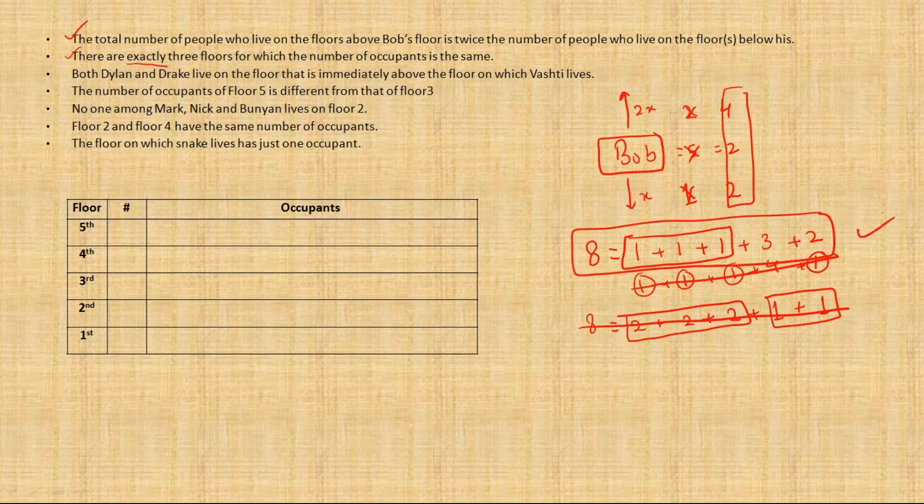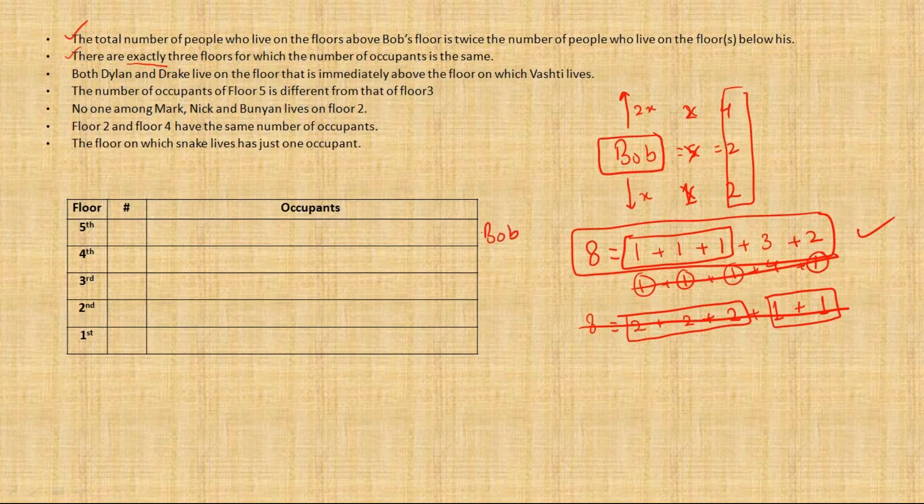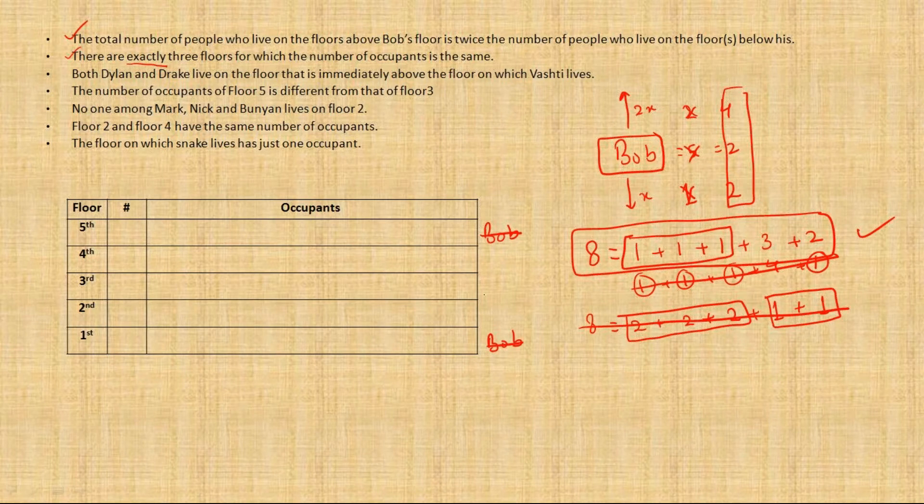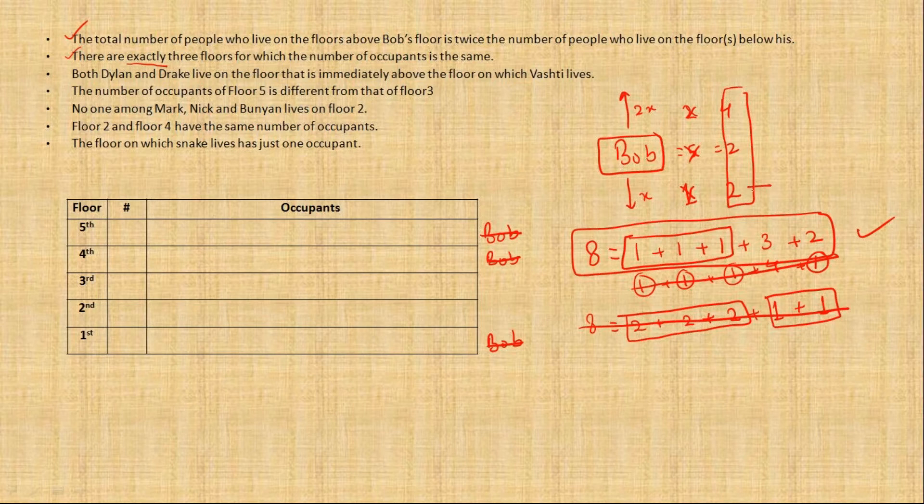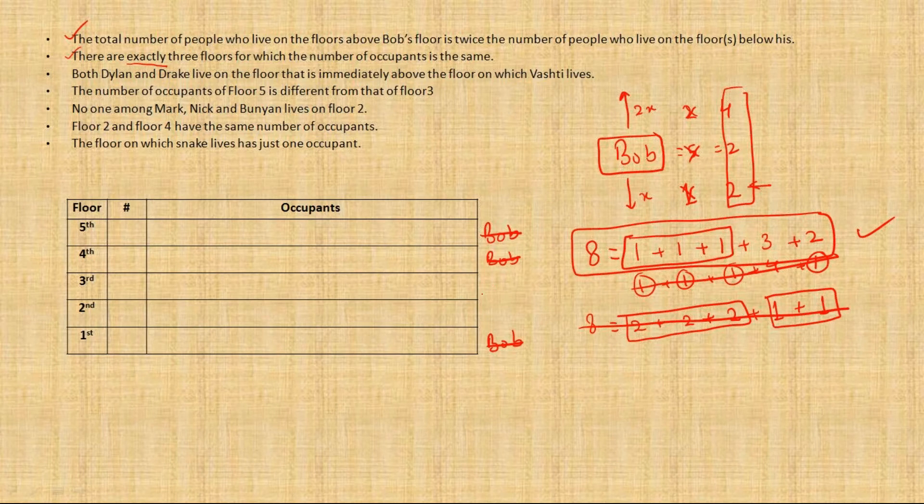Another thing that we need to understand. Now which floor can Bob live? Bob cannot be on floor number 5 because there are people living above Bob's floor. Similarly, he cannot be at first story because there are people living below Bob's floors. Now Bob also cannot be on the 4th floor because then there will be 3 floors below Bob, and on 3 floors you will have to place 2 people. Remember, there are 2 people living below Bob and 4 above Bob. Now on 3 floors if you put 2 people, there will be at least 1 floor on which there are 0 people. So we are now zeroing in on 3rd and 2nd floor.